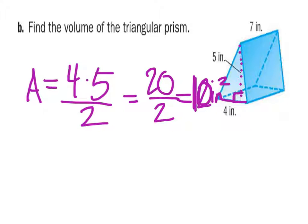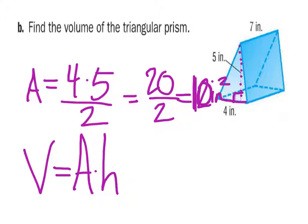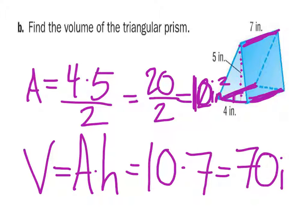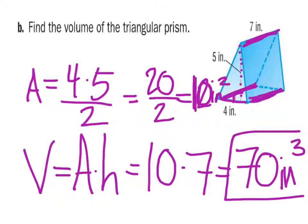Now to find the volume, I take the area of that triangle — 10 inches squared — and multiply it by what we'd consider the height, which is 7. Ten times 7 is 70 inches cubed, since it's volume and three-dimensional.